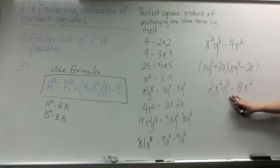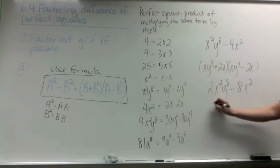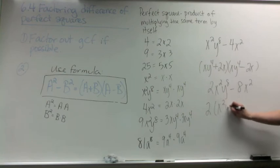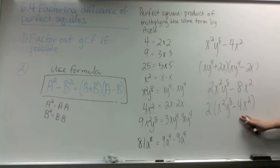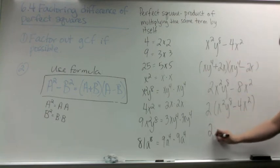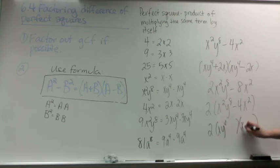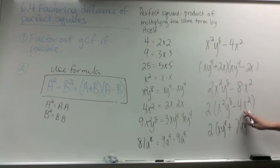In our next example, we have to be careful to also look for a GCF. In the previous two examples we didn't have a GCF. Here we have a GCF of 2, so we factor it out. Then we're left with a difference of perfect squares, just like before — it's the same problem except we have a 2 out front. So I bring down the 2, set up the two parentheses: x y to the 4th times x y to the 4th, putting in the plus and minus signs, and then 2x and 2x.